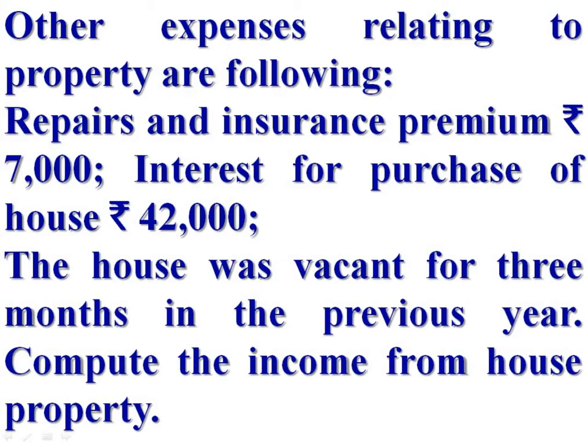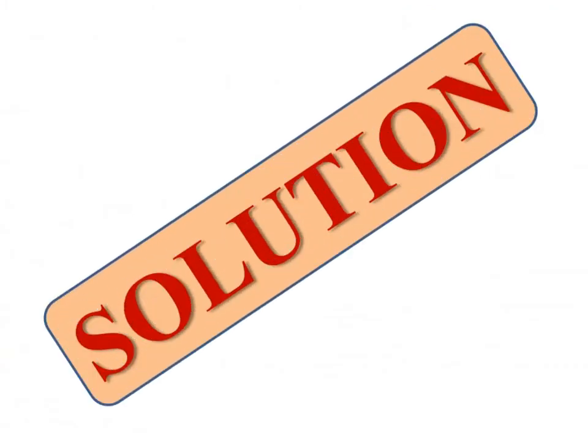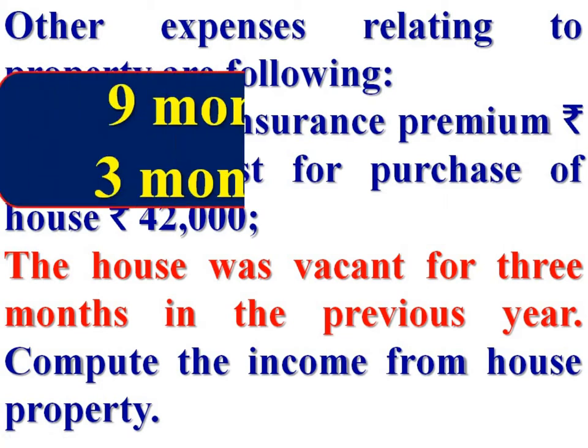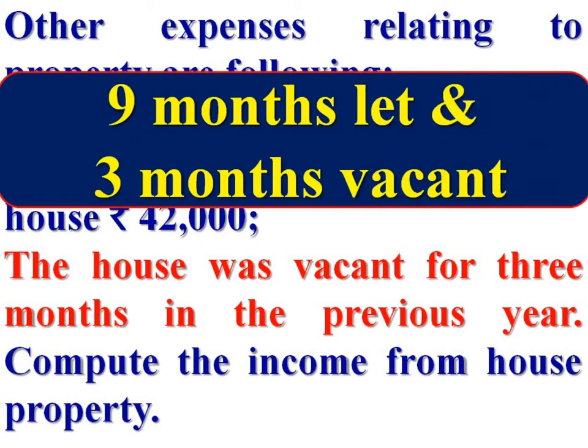This is the question and now we are entering into its solution — computation of income from house property. The speciality of this problem is that it is a let-out property and it was vacant for 3 months. It means the house was let out for 9 months and vacant for 3 months.